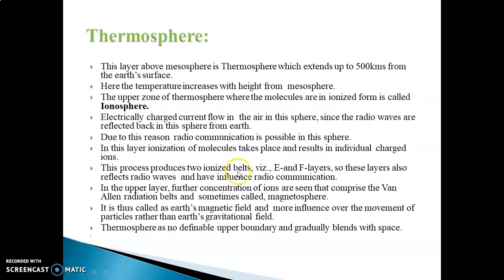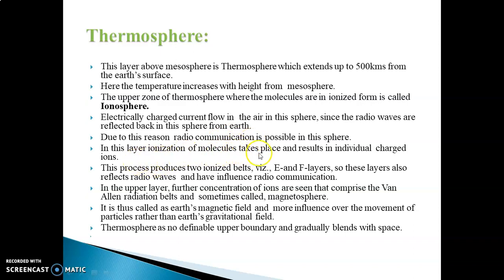Next is the Thermosphere — the layer above the Mesosphere which extends up to 500 km from the Earth's surface. Temperature increases with height from the Mesosphere. The upper zone of the Thermosphere is the Ionosphere, where ionization is formed. Electrically charged particles flow in this sphere. Since radio waves are reflected back here, radio communication is possible. Ionization of molecules takes place, resulting in individual charged ions.